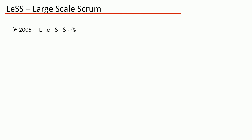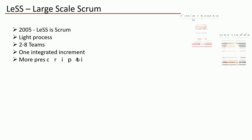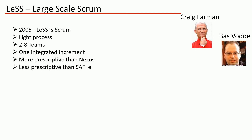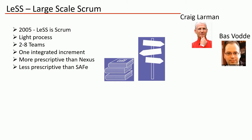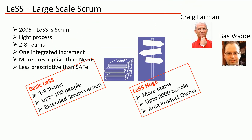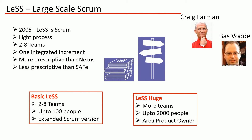LeSS stands for Large Scale Scrum. Around 2005, Bas Vodde and Craig Larman developed the LeSS framework, applying scrum principles and rules to large-scale projects. Their goal was to develop large-scale projects successfully while staying within the constraints of scrum. There are two types: Basic LeSS, with two to eight teams of about eight people, and LeSS Huge, which can scale up to 2000 people working on the same product.